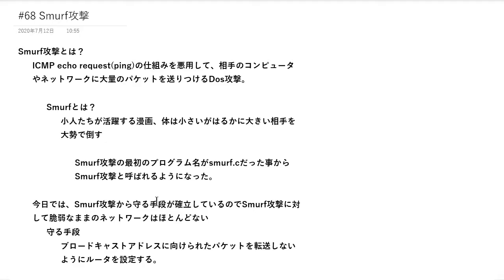そもそも、このスマーフ攻撃の最初のプログラム名がスマーフ.マシーだったことから、スマーフ攻撃と呼ばれるようになったそうです。先に言っておくと、スマーフ攻撃から守る手段というのは確立しているので、スマーフ攻撃に対して脆弱なままなネットワークというのはほとんどない状態です。守る手段としては、ブロードキャストアドレスに向けられたパケットを転送しないように、ルーターでデフォルトで設定しているそうです。